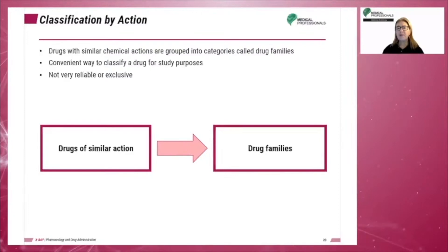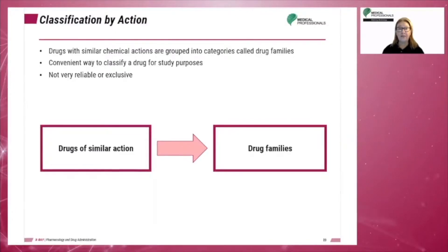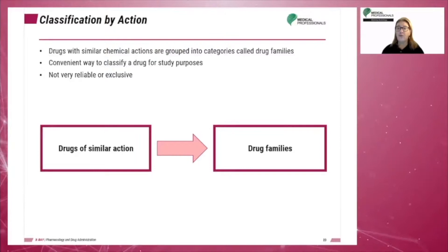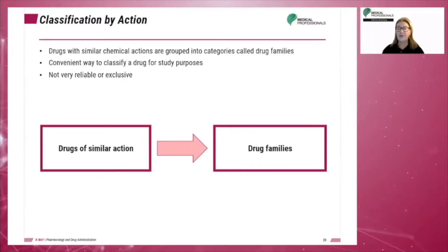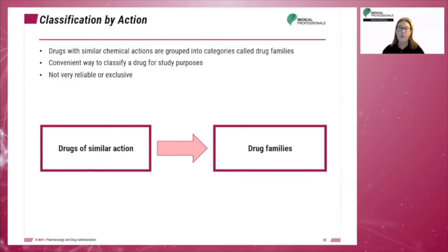Drugs with similar chemical actions are grouped into categories called drug families. For example, drugs that relieve pain are classified as analgesics. This is a very convenient way to classify a drug for study purposes, but it is not very reliable or exclusive, because one drug may have several different physiologic effects on the body and will be listed under more than one category.